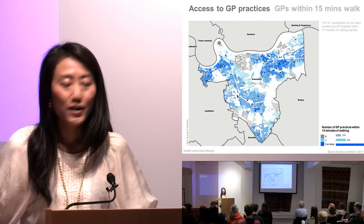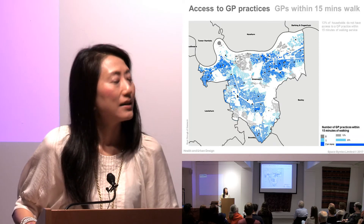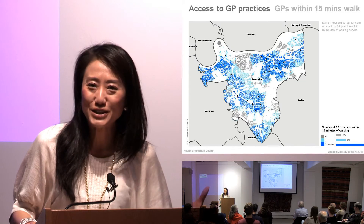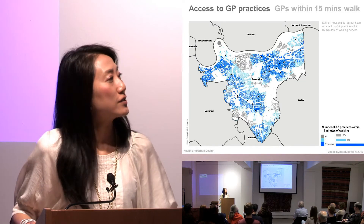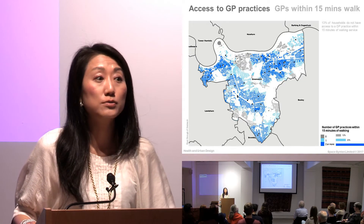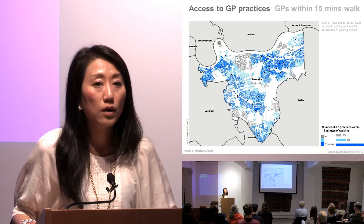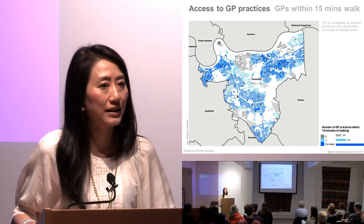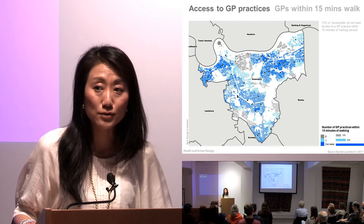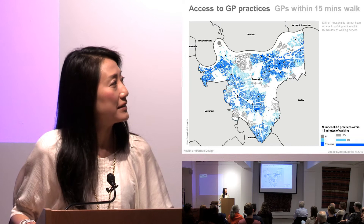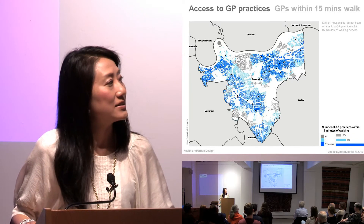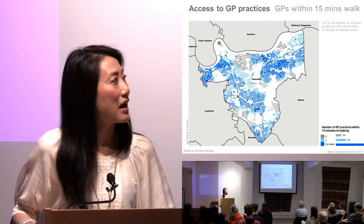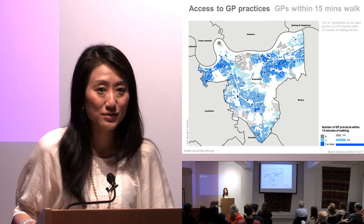You can also calculate how many GP surgeries you can access: the dark blue shows two or more, blue is one, and grey is zero. We also estimated the proportion of households — for example, in Greenwich, 66%, or two-thirds of households, have access to two or more GP surgeries.